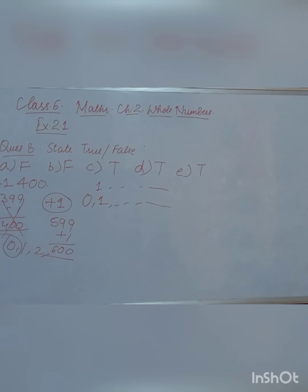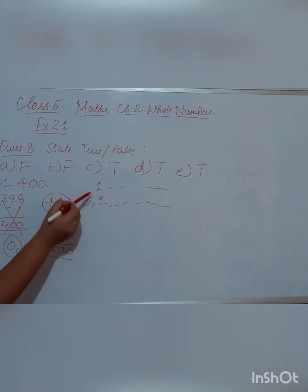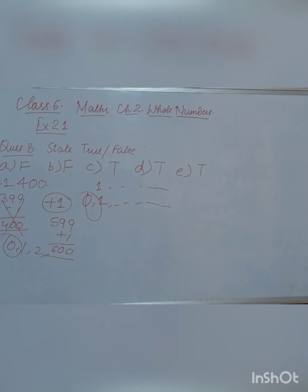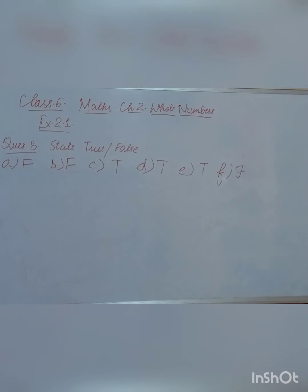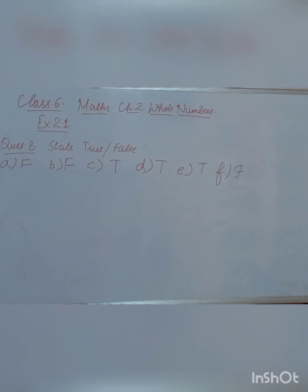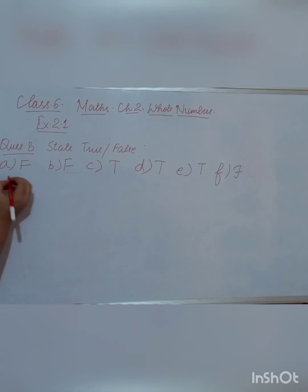The 6th statement says: 'All whole numbers are natural numbers.' That is not correct — all whole numbers are not natural numbers. Whole numbers include 0, which is not a natural number. So our 6th statement is false.